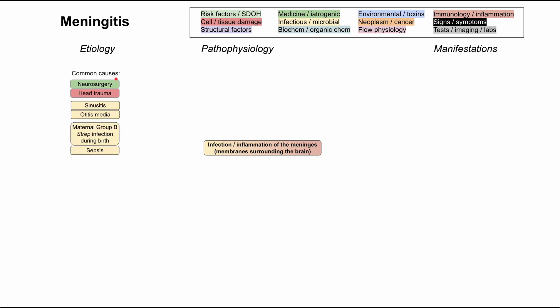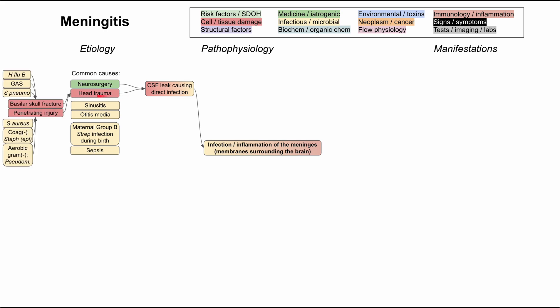First, we can mention some common causes of meningitis. Neurosurgery and head trauma cause a CSF leak that causes direct infection of the meninges. CSF is cerebrospinal fluid, which surrounds the brain and is contained by the meninges. When something breaks this blood-brain barrier, you can have direct infection of the cerebrospinal fluid that directly connects to the meninges. Head trauma does this as well. We can break down the causes of head trauma to help differentiate the types of bacteria that cause meningitis.